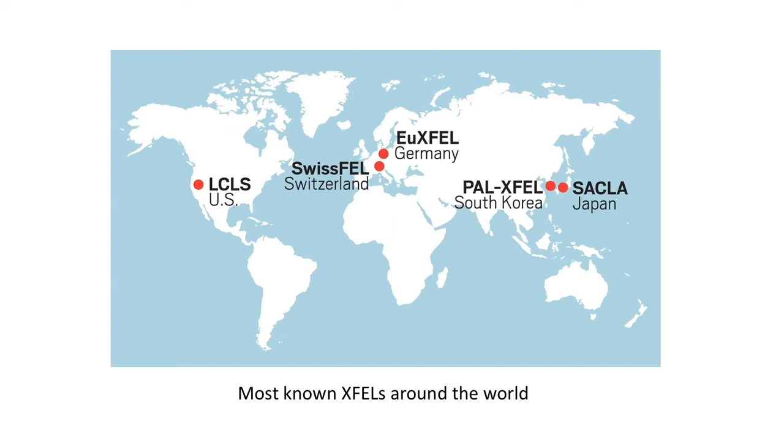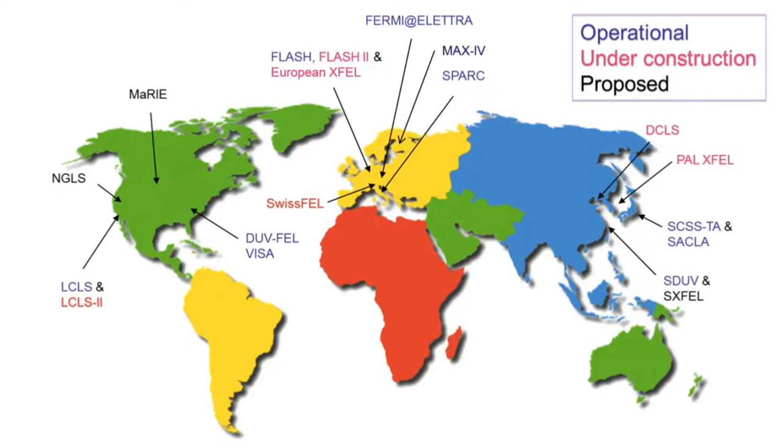The first free electron laser reaching the X-ray regime started lasing in 2009. It was located in Stanford in the US and is currently considered one of the most powerful X-ray sources in the world, with a relative brightness about 1 billion times greater than that of traditional synchrotron sources. Nowadays, there is a handful of X-ray free electron laser facilities scattered around the world. A few new ones are still under construction.